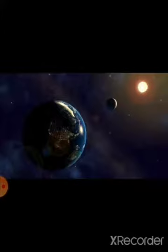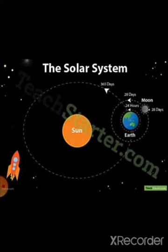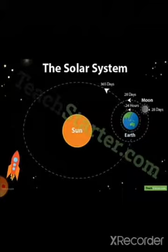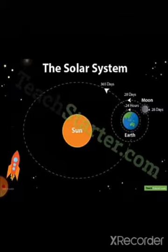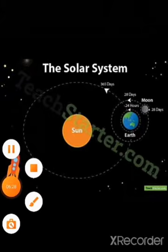In this picture you can see the sun in the middle. Earth is revolving around the sun and completes one revolution in 365 days. In the same way, the moon is moving around the earth and the moon completes its one revolution in 28 days.